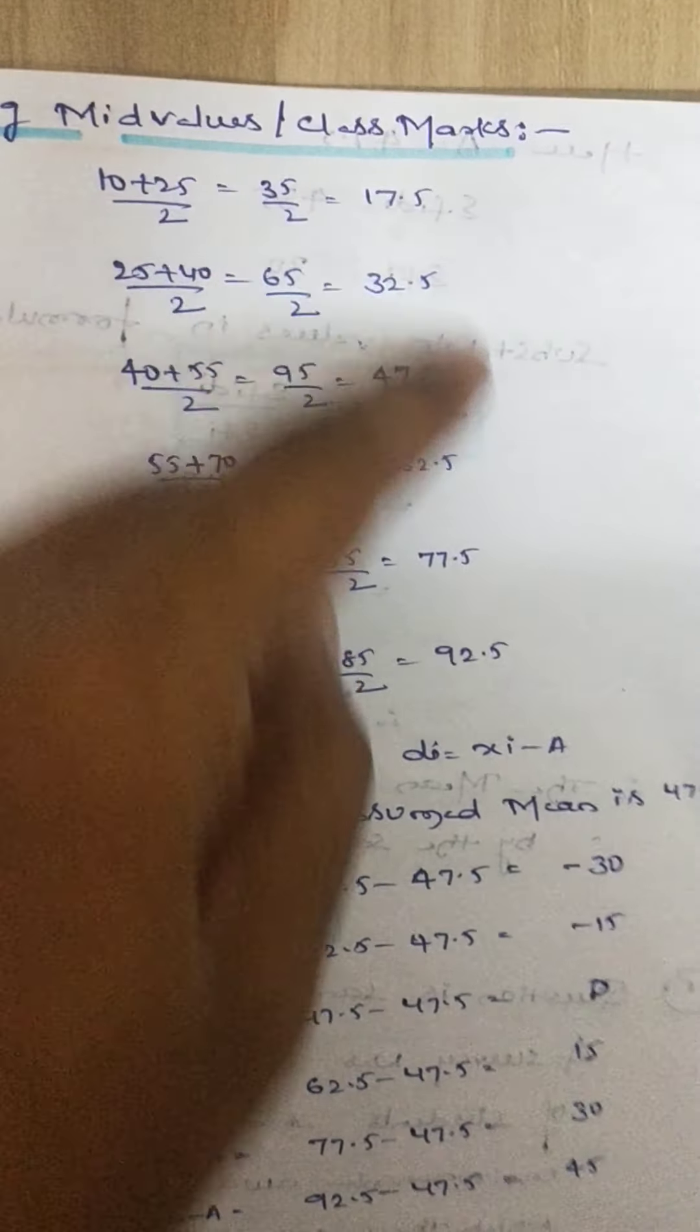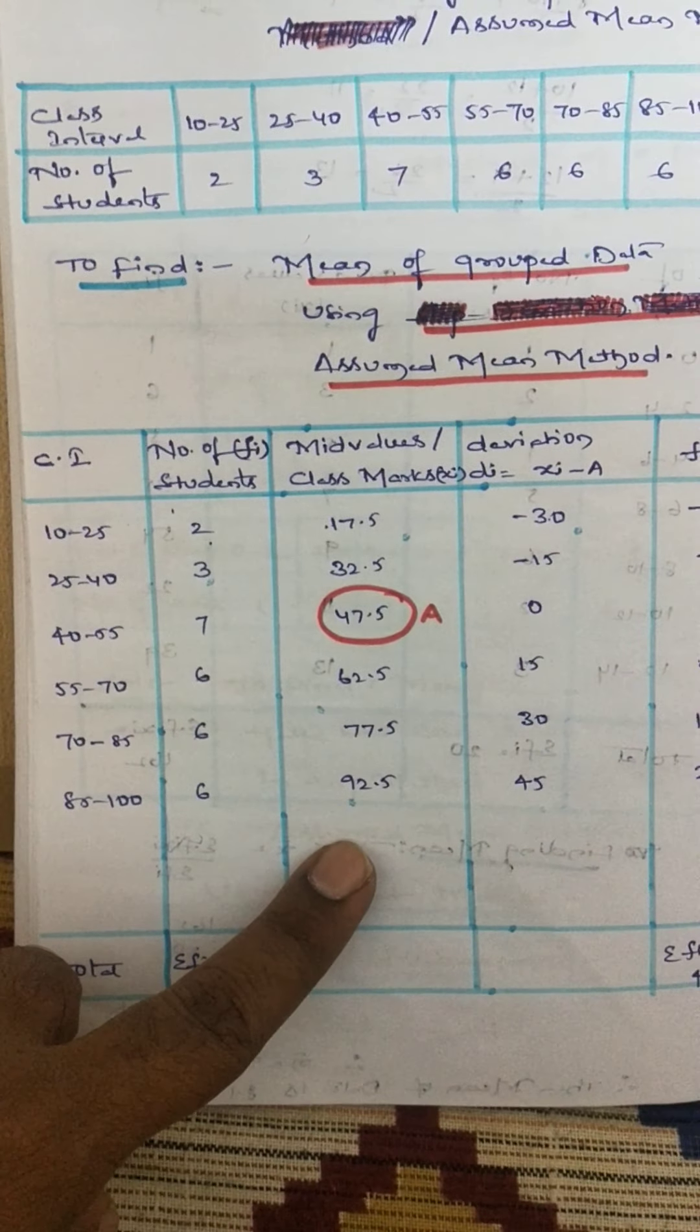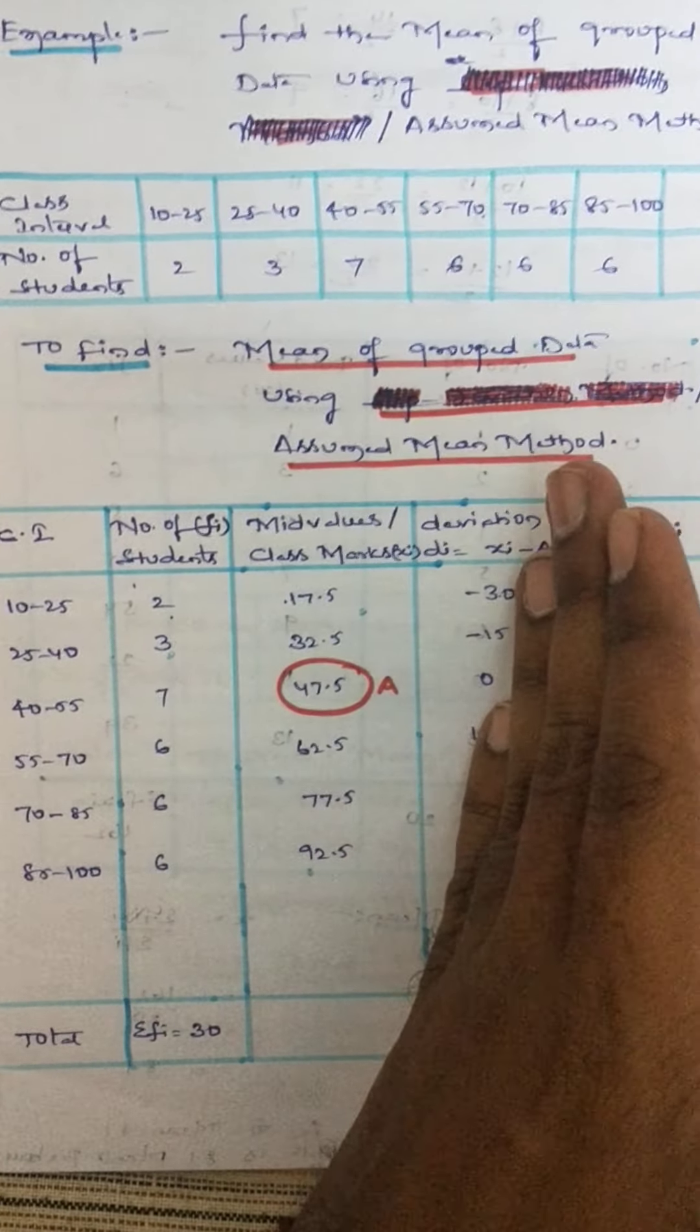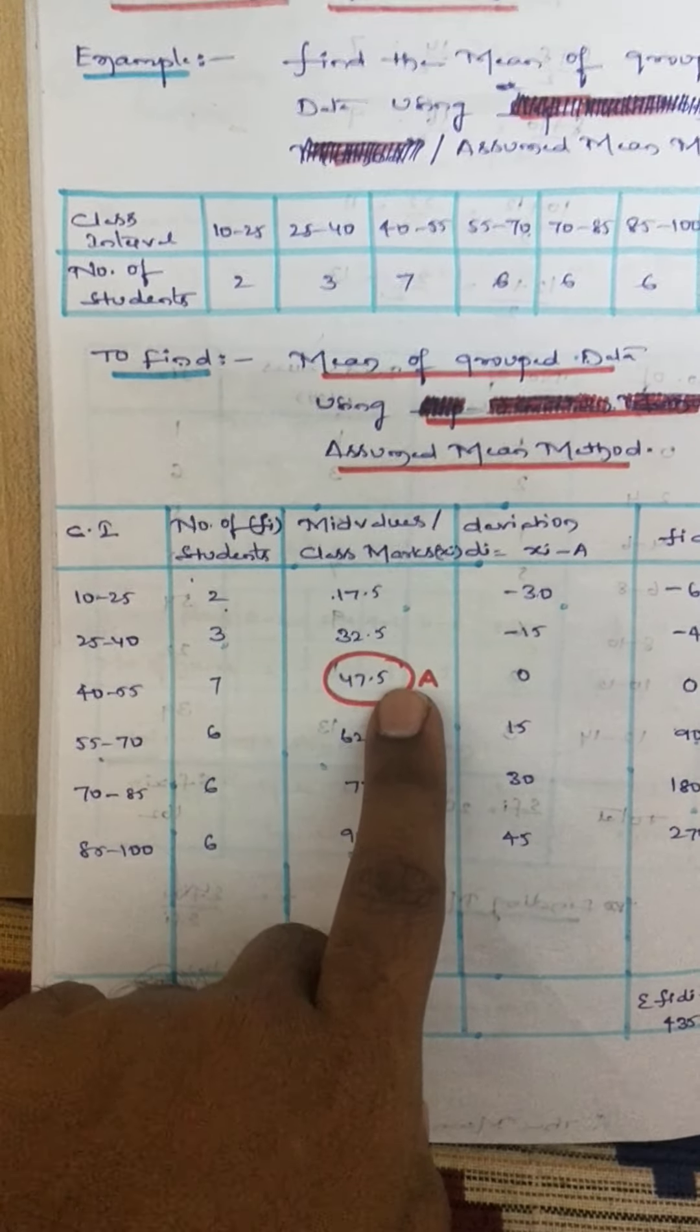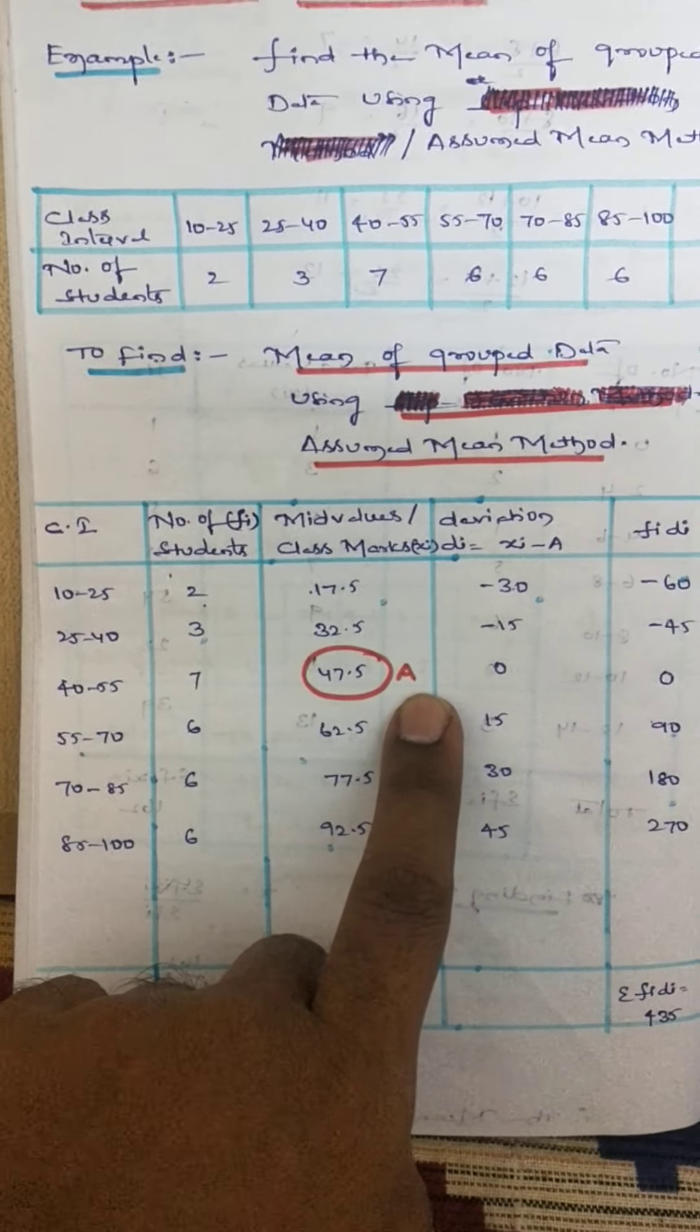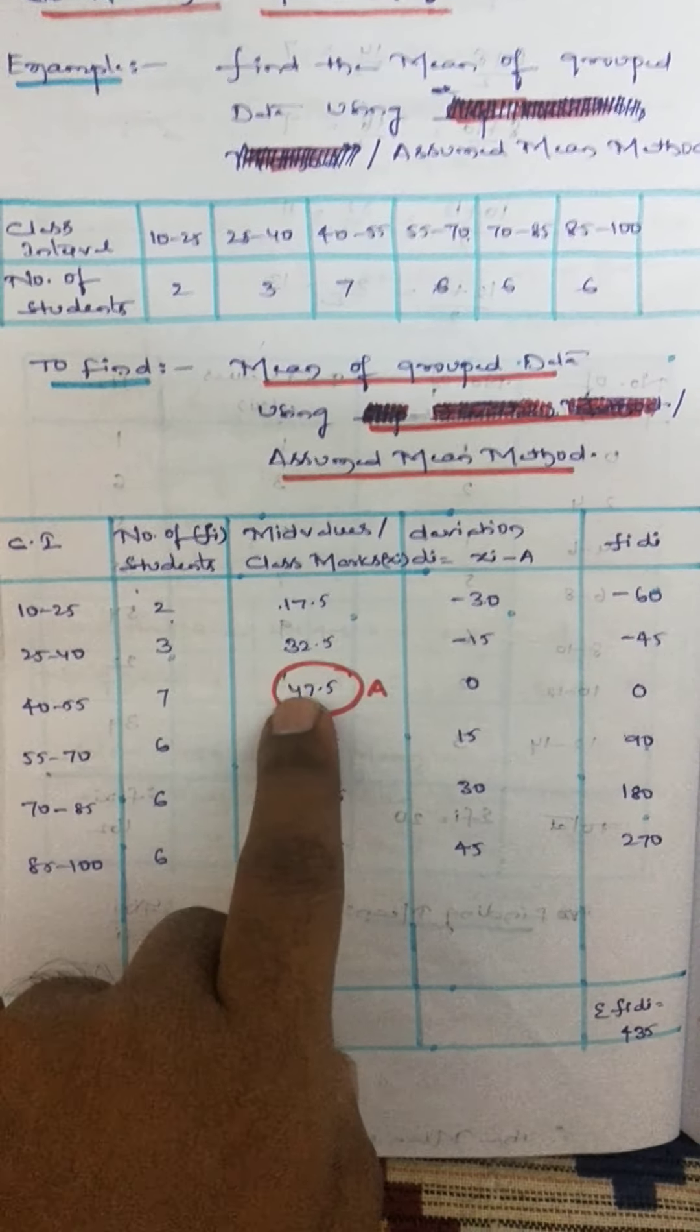Whatever result we got, mention it in the third column. Then before going to the fourth and fifth columns, I will explain what this is and why I have taken A as the third value. Actually, A is called the assumed mean, students.